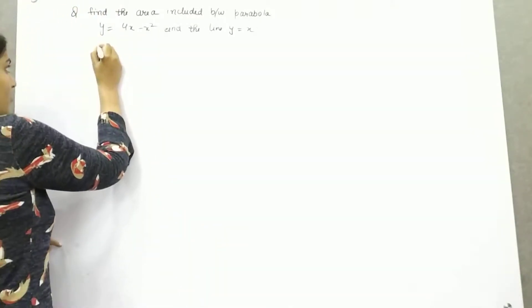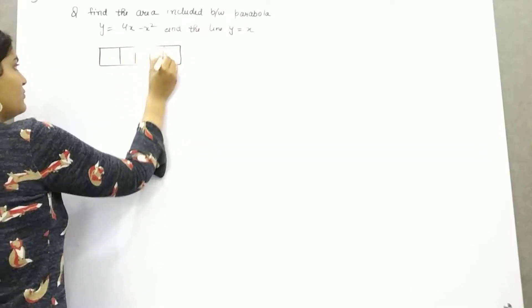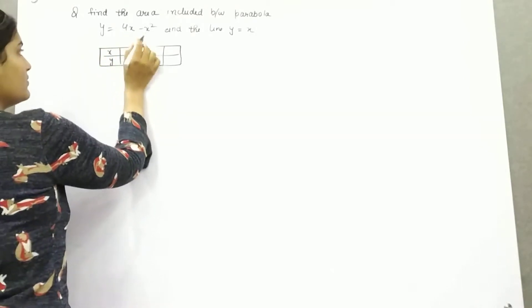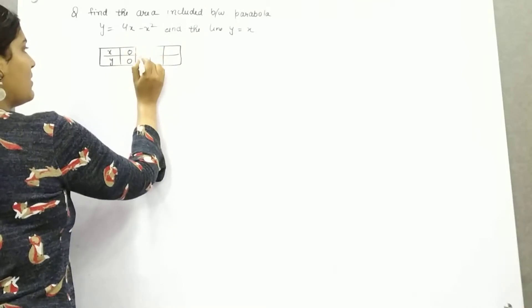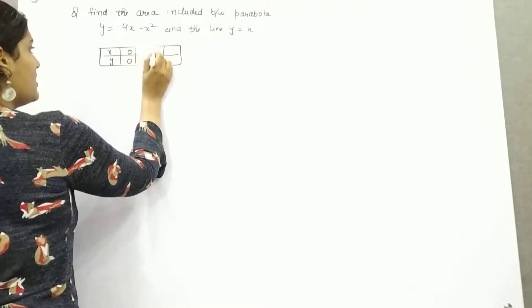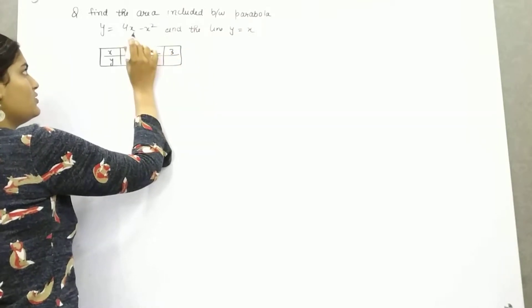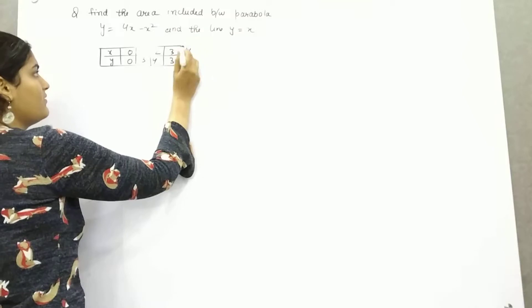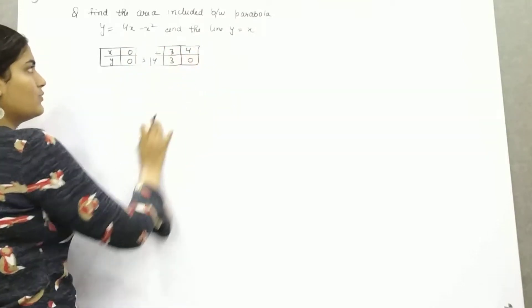So what you can do, make a table to find out different values. If you put x = 0, y will be 0. If x = 1, 4 times 1 minus 1 equals 3. If x is 2, 8 minus 4 is 4. If x is 3, 12 minus 9 equals 3. And if x is 4, 16 minus 16 equals 0.